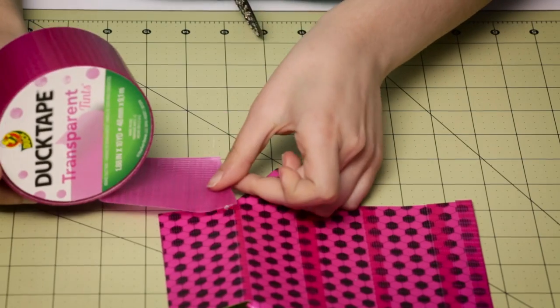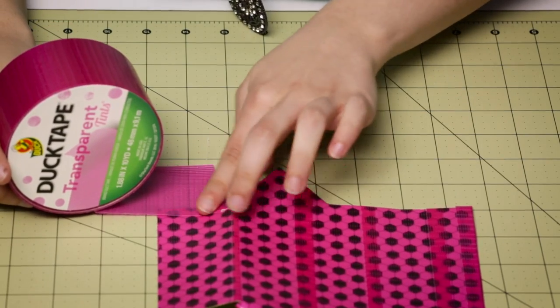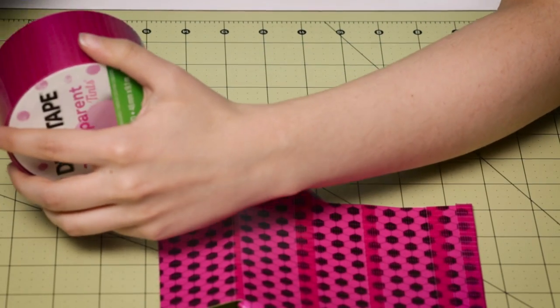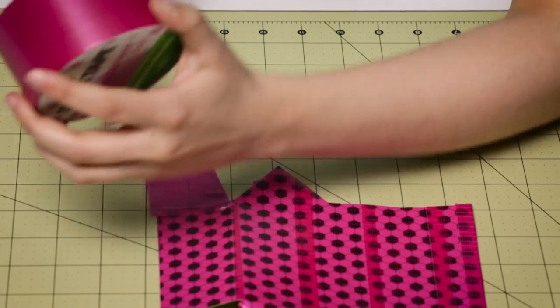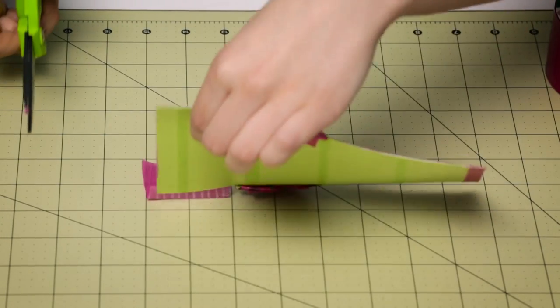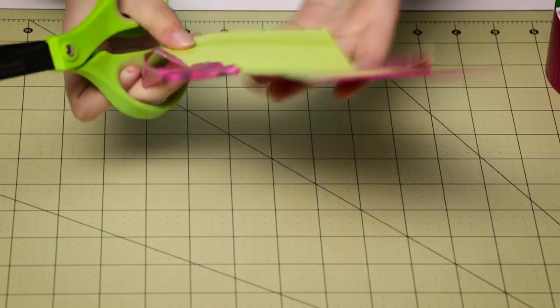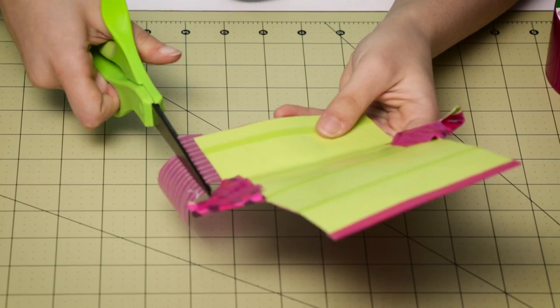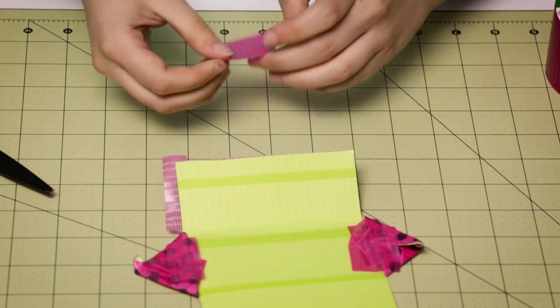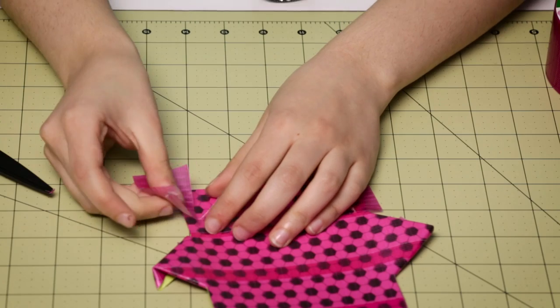And then I'm just going to add another piece to this part. Once again, just trim that down. And then I'm actually going to use the same piece to do the same thing on the other side.